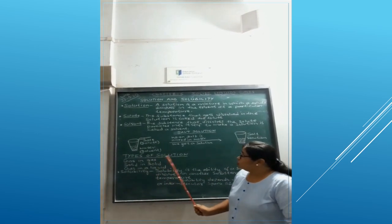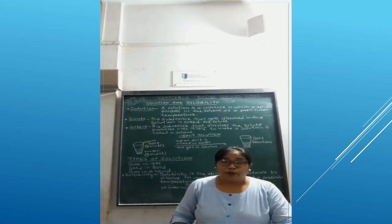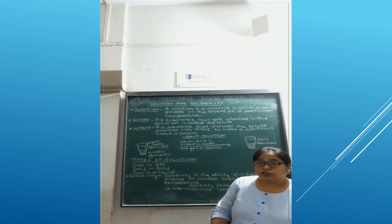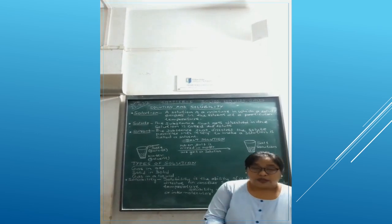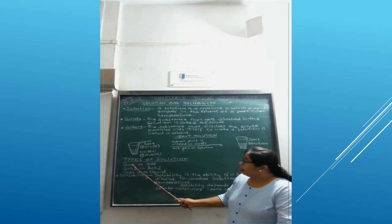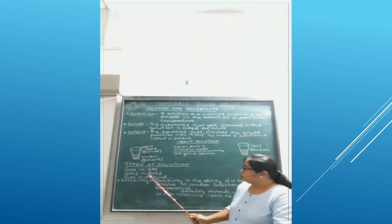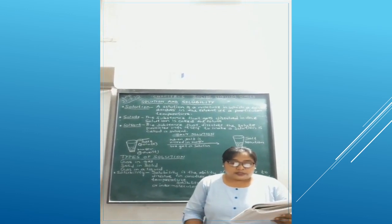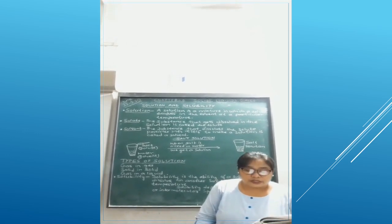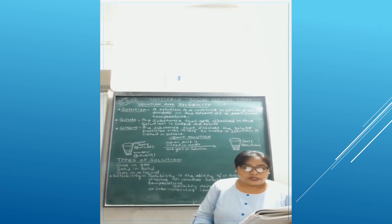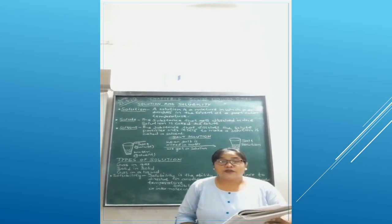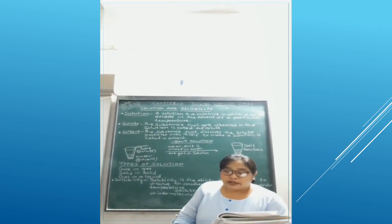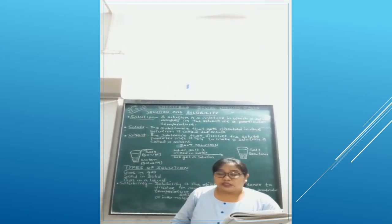Now let's talk about the types of solution. Please open your book page number 66 to get the table of different types of solution. Gas in gas: when oxygen and other gases mix with nitrogen, we get air. Solid in solid: when carbon and iron mix, we get steel. Gas in liquid: when carbon dioxide mixes with water, we get soda water.